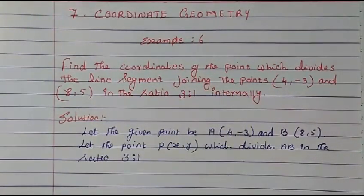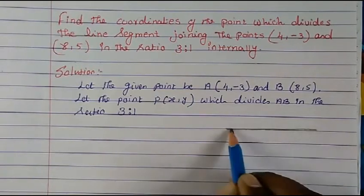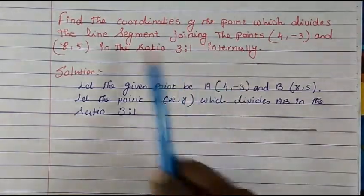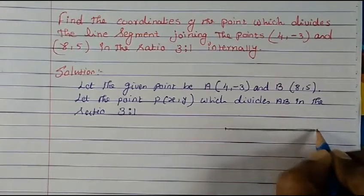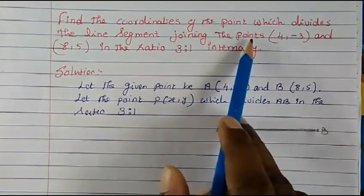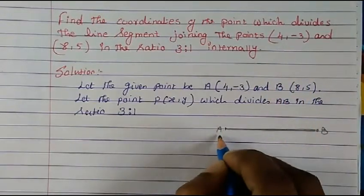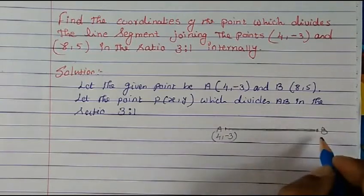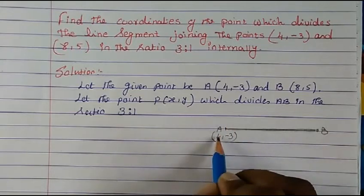Let's understand the question. There is a line segment — consider this a line segment. We have to find the coordinates of the point which divides it. Consider this is point A and this is point B. So we consider point A as (4, -3) and point B coordinates — coordinates meaning the x value and the y value.